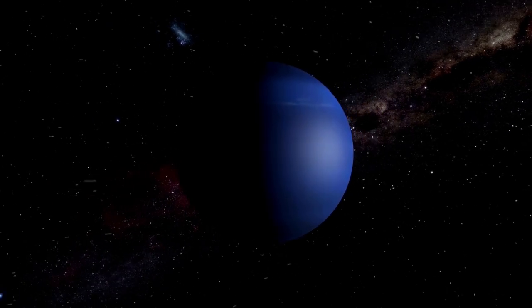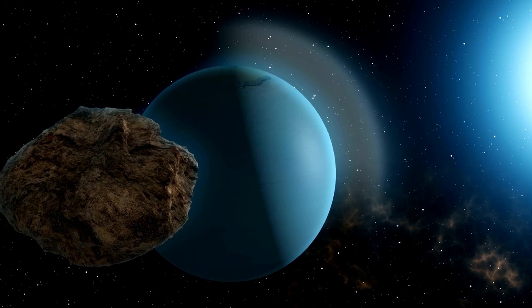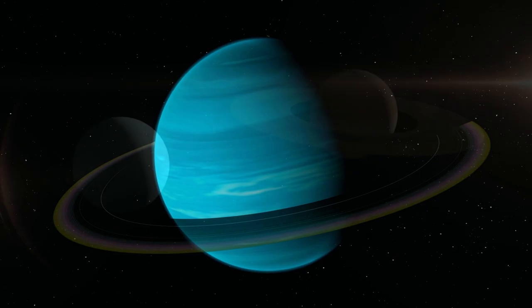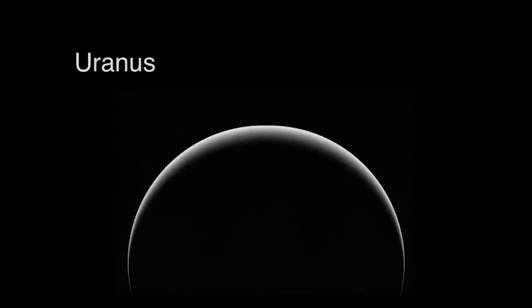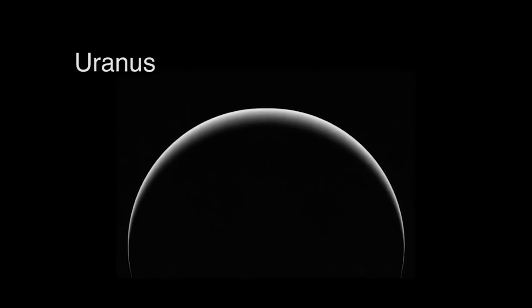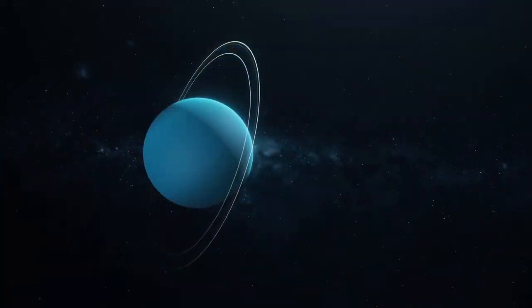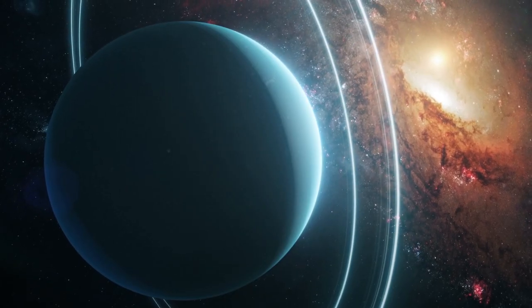The composition of the outer moons remains unknown, but they are likely captured asteroids. Uranus has two sets of rings. The inner system of nine rings consists mostly of narrow, dark gray rings. There are two outer rings: the innermost one is reddish like dusty rings elsewhere in the solar system, and the outer ring is blue like Saturn's E-ring. In order of increasing distance from the planet, the rings are called Zeta, 6, 5, 4, Alpha, Beta, Eta, Gamma, Delta, Lambda, Epsilon, Nu, and Mu. Some of the larger rings are surrounded by belts of fine dust.